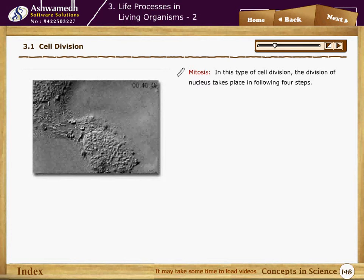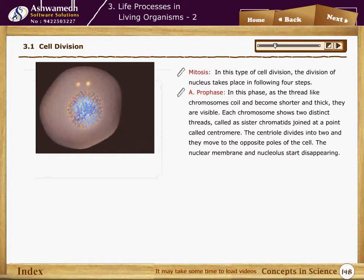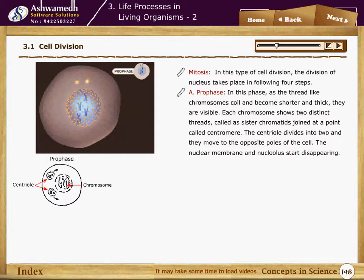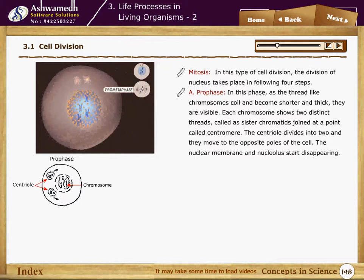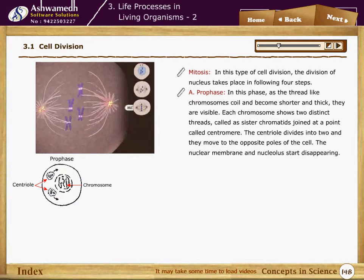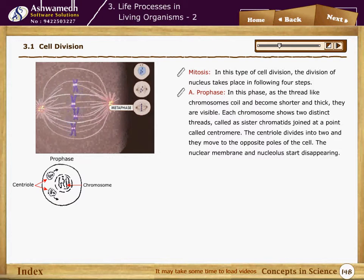Mitosis: In this type of cell division, the nucleus divides in four steps. In prophase, the thread-like chromosomes coil and become shorter and thick, making them visible. Each chromosome shows two distinct threads called sister chromatids, joined at a point called the centromere. The centriole divides into two and they move to the opposite poles of the cell.